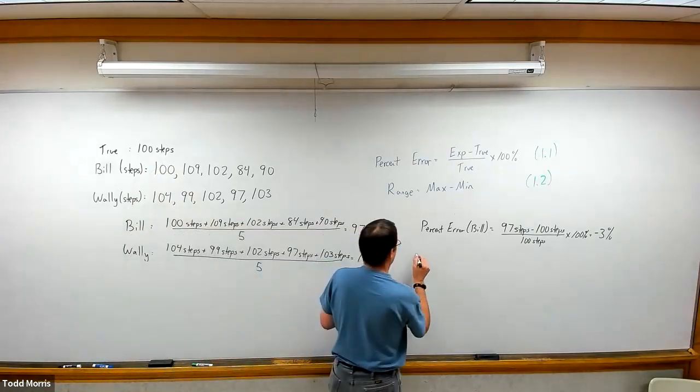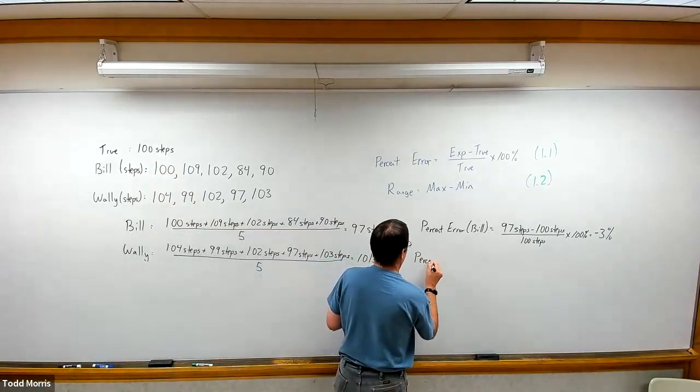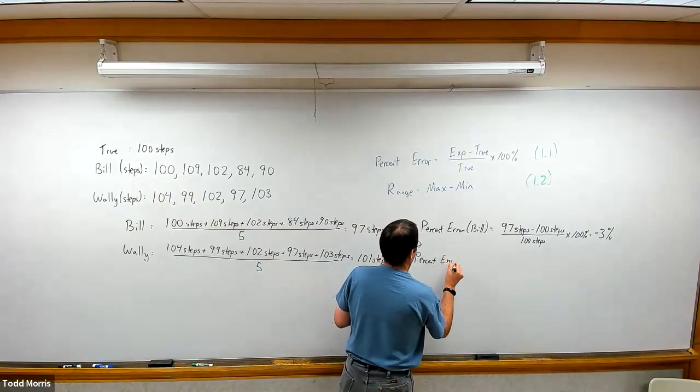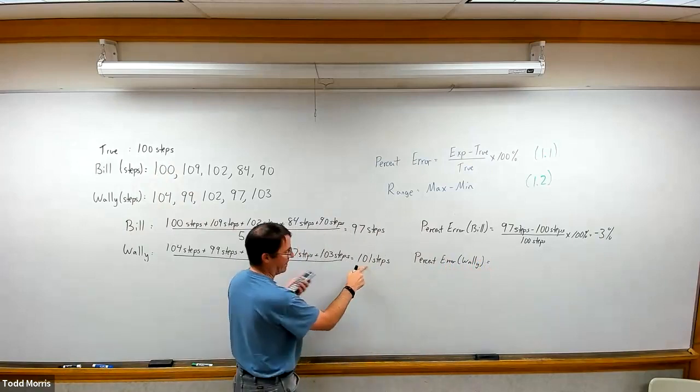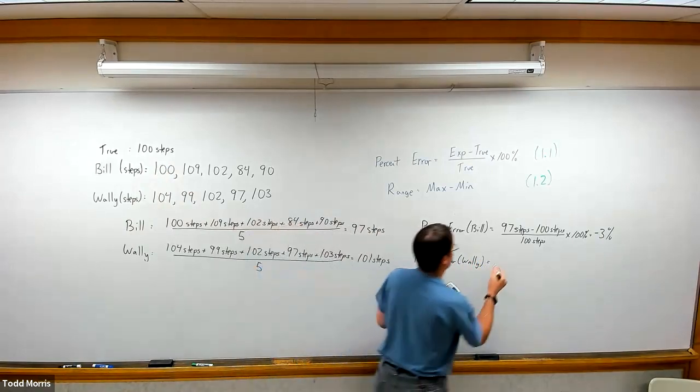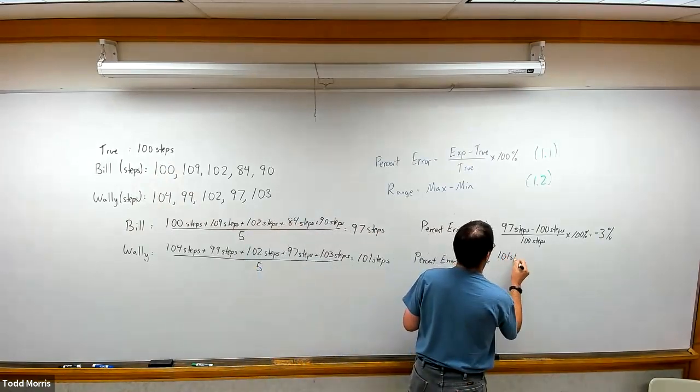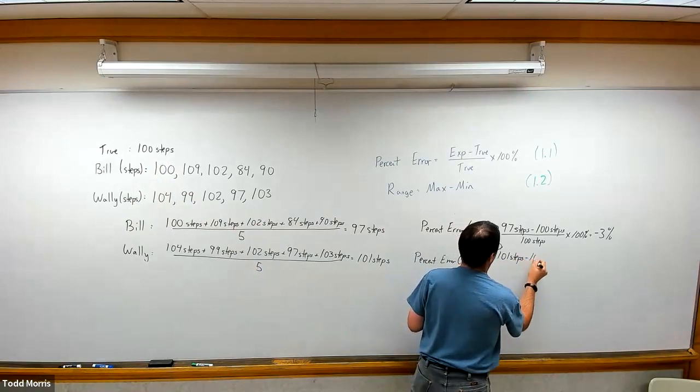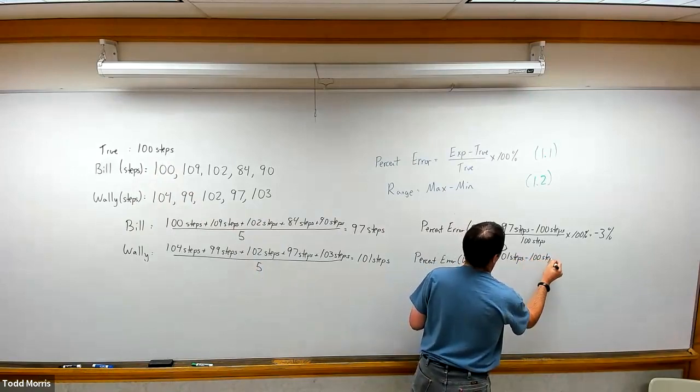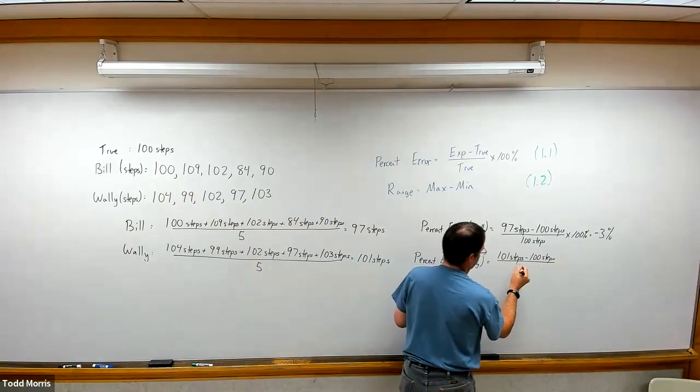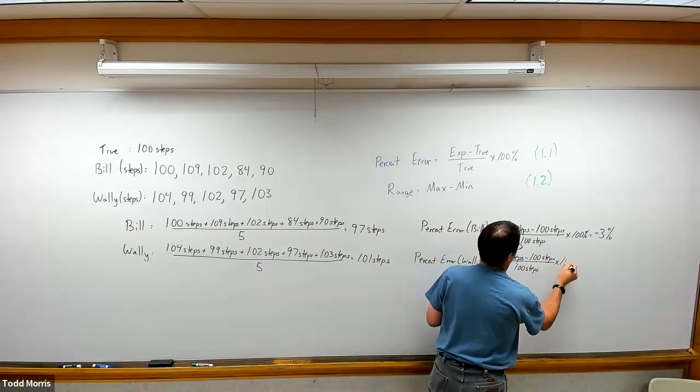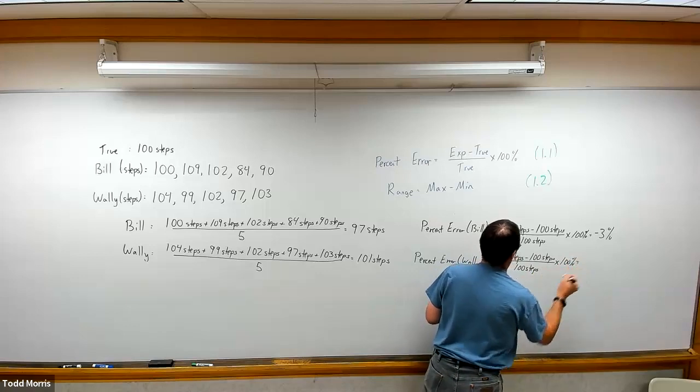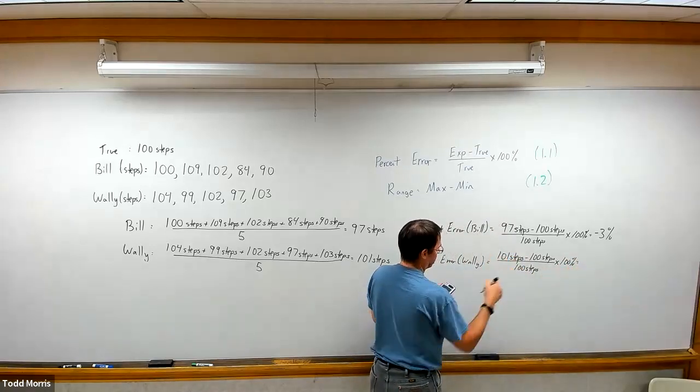With Wally, same idea. I'm going to take our average value as our best experimental number, 101 steps, subtract from that the true number, 100 steps, divide that once again also by the true number, 100 steps, multiplied by 100. We do that: 101 minus 100 divided by 100.